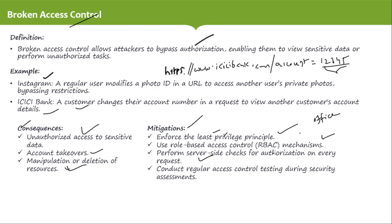Another mitigation is to perform server-side checks. We need to check server-side authorization on every request — verifying whether a given user is authorized to access another user's account. For example, a bank manager may be permitted to view accounts, but a regular user should not be able to see other users' details.